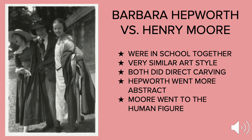In Barbara Hepworth's early career she was in school with the artist Henry Moore. If you look up some of his work it is very similar in style to Hepworth's sculpture. They were both direct carvers and were among the first to do that. But at one point in their careers, Henry Moore decided to keep more grounded sculpture focused on the human figure, while Hepworth moved towards a more abstract take on sculpture.